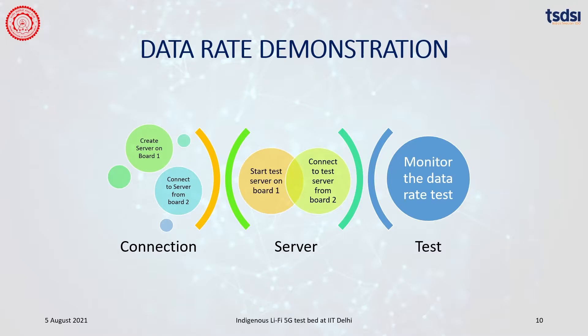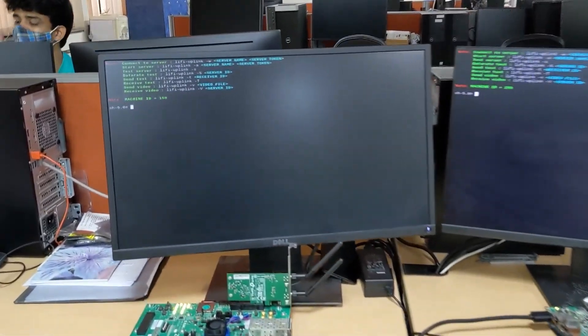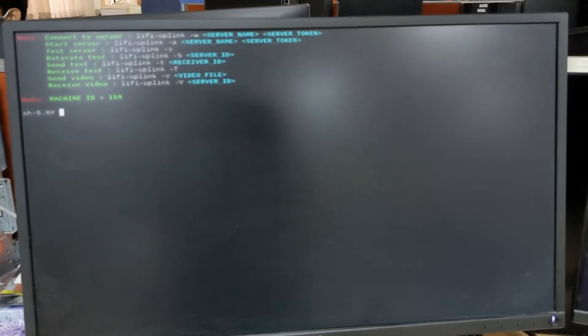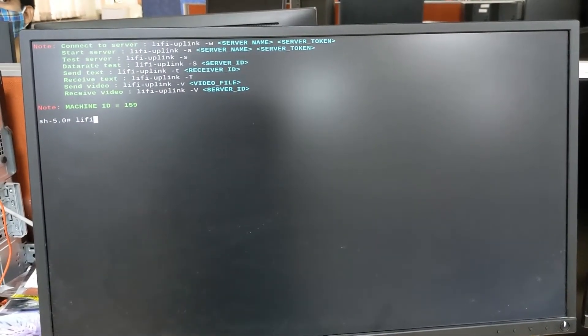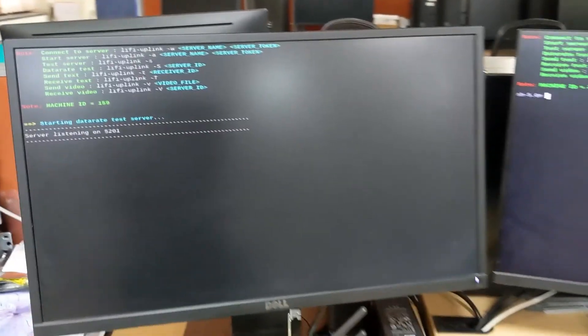Our first demonstration is to test the data rate of the link. We are going to start a testing server on board 1 and connect to it from board 2. Note that this test server is different from the advertisement server created earlier — it runs on port 5201. The software will start transmitting random data for an interval of 10 seconds, and after each second it will calculate and display the data rate the link is operating at. As the link is already connected and both devices have board IDs, we will use this command on board 1 with ID 159 to start the test server, which requires no argument. The server is now started at port 5201.